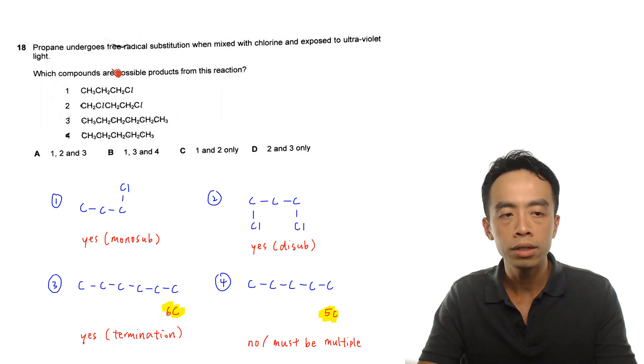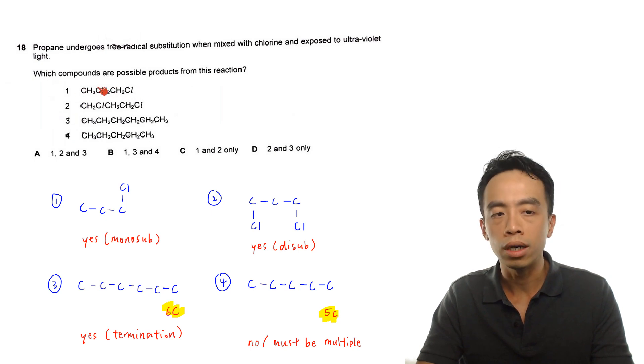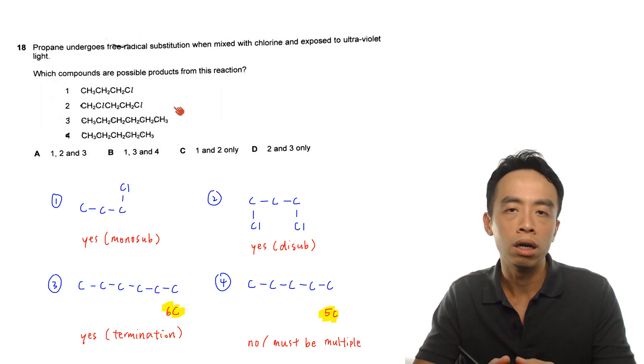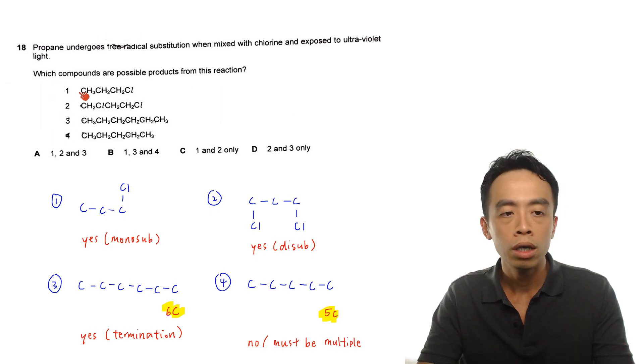So we're given four possibilities. Option number one is chloropropane, one chloropropane, the number of carbon here is 3 carbon. Then option number two will also be involving chloropropane, but I will have two chloro groups. One is at position one, one is at position three.